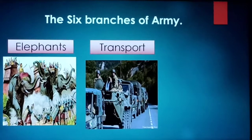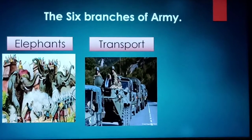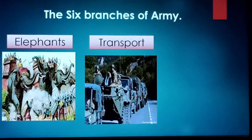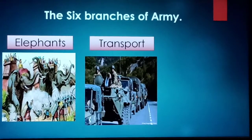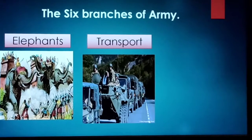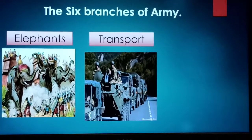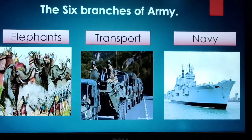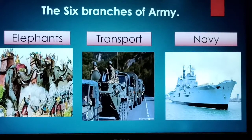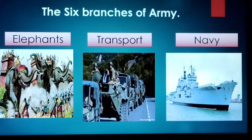The fifth branch was transport. The cities in the Mauryan Empire were very far from each other, so it was important to control roads and trade. At that time there were many dacoits waiting, so many soldiers were appointed for transportation to ensure goods were carried safely from one place to another. The sixth branch was navy — as they were trying to conquer places overseas, and Chandragupta Maurya had captured coastal areas, a trained navy was also maintained.